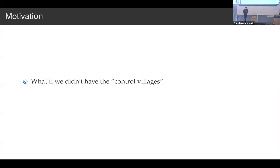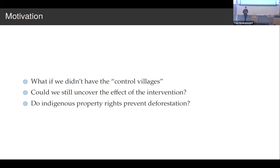Benin part two: what if we didn't have the control villages to look at? Could we still uncover the effects of this intervention? I asked this because originally I didn't have any data on what the control villages were. But it turns out this is actually the question that most people doing conservation impact evaluation are trying to answer — we only see the places which were selected to be conserved and never know what the right counterfactual is. A lot of work goes into thinking about what we can use to compare the places where conservation happened, or how we know conservation worked compared to what would have happened absent conservation.